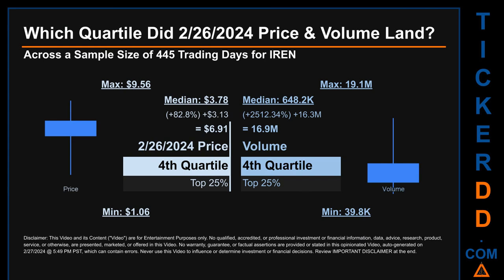Hello, my name is Maria. Which quartile did February 26, 2024 price and volume land? Across a sample size of 445 trading days, the maximum end-of-day price for IREN was $9.56 while the minimum was $1.06. Within that price range, February 26, 2024's price of $6.91 landed within the fourth quartile, meaning it was within the top 25% of all sampled end-of-day prices. The day's volume also landed within the fourth quartile, marking it within the top 25% of all sampled daily volume, which saw a max daily volume of 19.1 million and a minimum of 39.8 thousand.